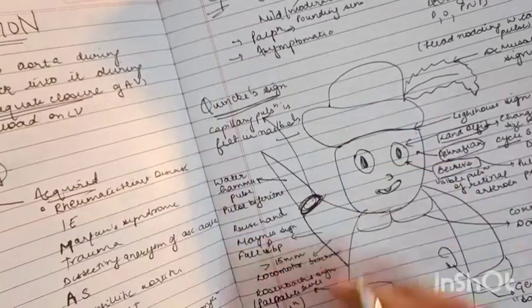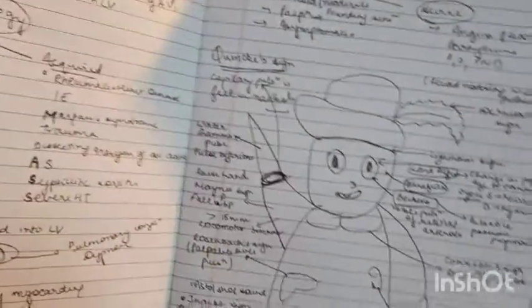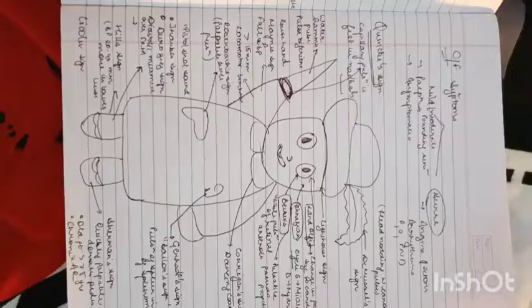This covers most of the signs which are seen in aortic regurgitation. So for a quick view, this is the diagram.